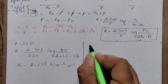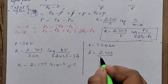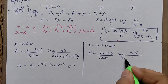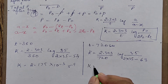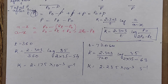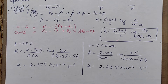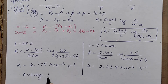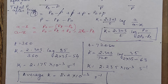The K value remains the same throughout the reaction. Taking the average: K_avg = (2.175 × 10⁻³ + 2.235 × 10⁻³)/2 = 2.210 × 10⁻³ s⁻¹. This is the answer for the first order reaction rate constant. Question 1 is clear.